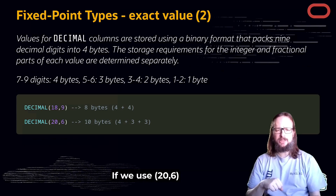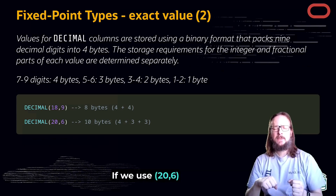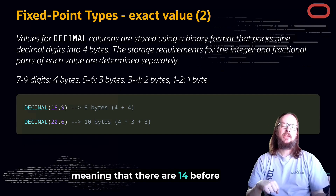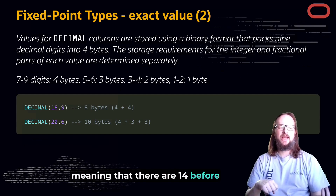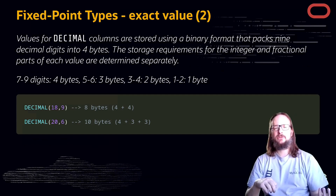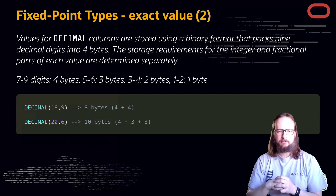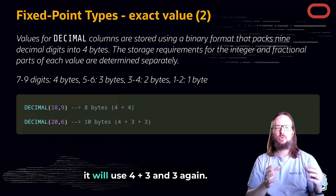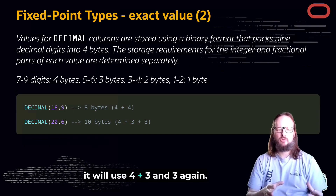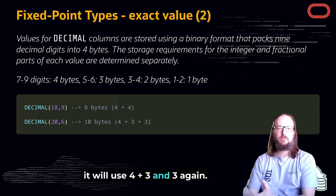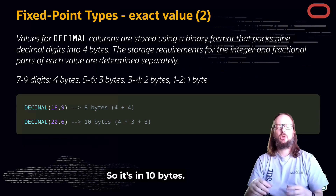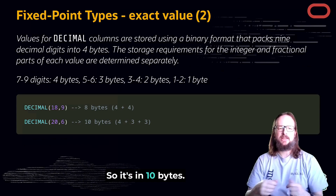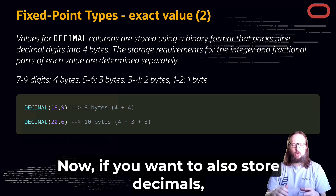If we use DECIMAL(20, 6), that means 14 digits before the decimal point and 6 after. It will use 4 plus 3 bytes, and 3 bytes again — so 10 bytes total to store this value.